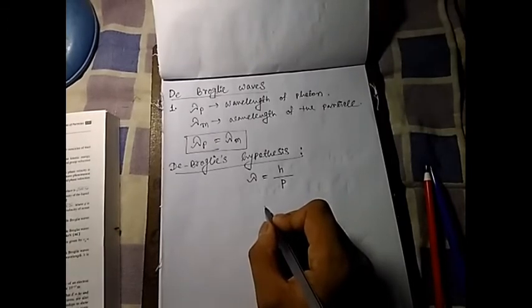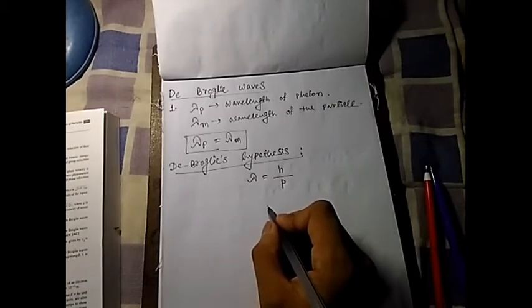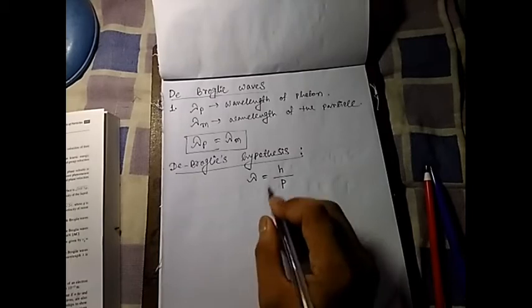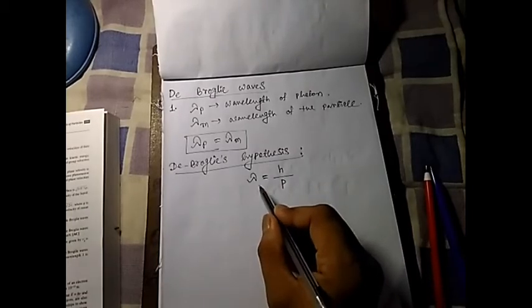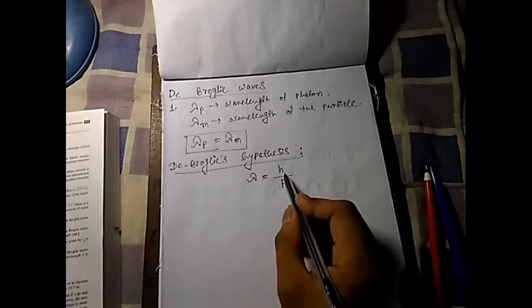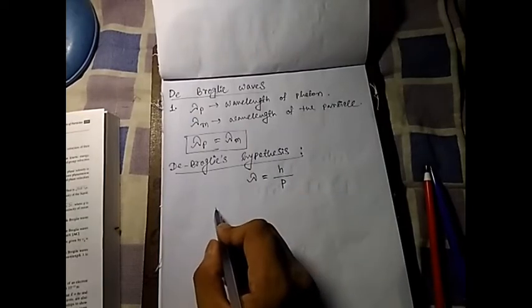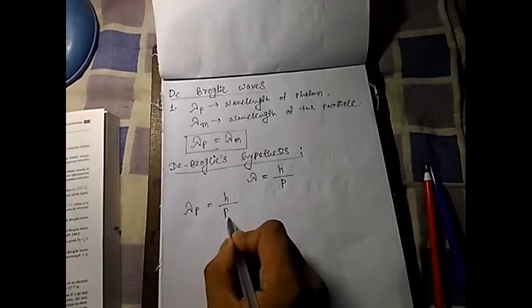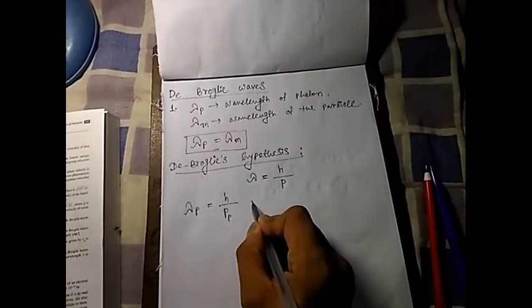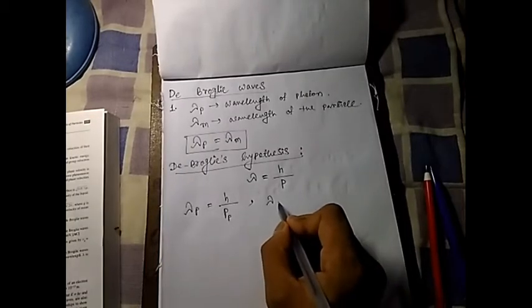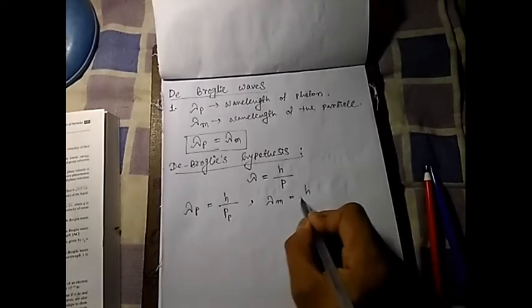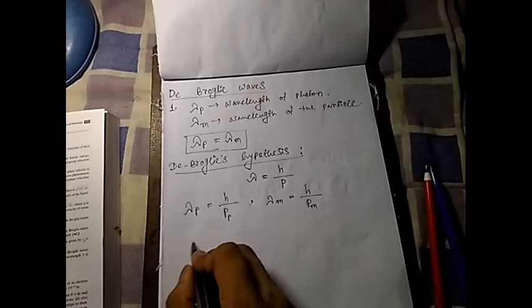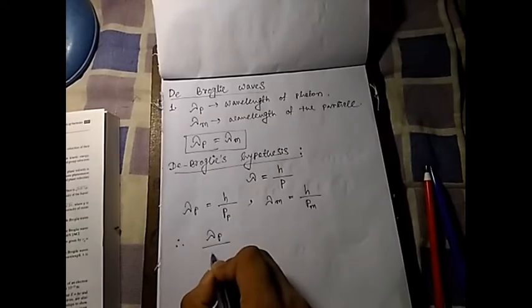If we want to compare the linear momentum of the photon and the particle, we substitute the wavelength values. H is a constant equal to 6.626 times 10 to the power minus 34 joule-seconds. We define lambda_p equal to h divided by p_photon, and lambda_m equal to h divided by p_m, the particle's momentum. Then comparing these two relations, we take the ratio lambda_p over lambda_m.